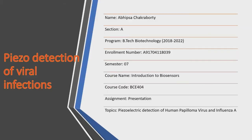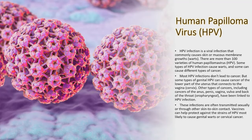I am Abusha Chakrabarty and I will be speaking on piezo detection of viral infection, covering human papillomavirus (HPV) and influenza A virus. HPV is a very common virus with about 100 types affecting different parts of the body. About 35 types can affect the genitals including the vulva, vagina, cervix, scrotum, rectum, and anus. Of those, about 14 types are considered high risk for leading to cervical cancer.